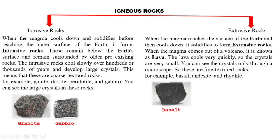Extrusive rocks form when magma reaches the surface of the earth and cools down. When magma comes out of a volcano it is known as lava. This lava cools very quickly, so the crystals formed are very small. Basalt is a good example of extrusive rock. The key difference is that intrusive rocks have large crystals while extrusive rocks have very small crystals.